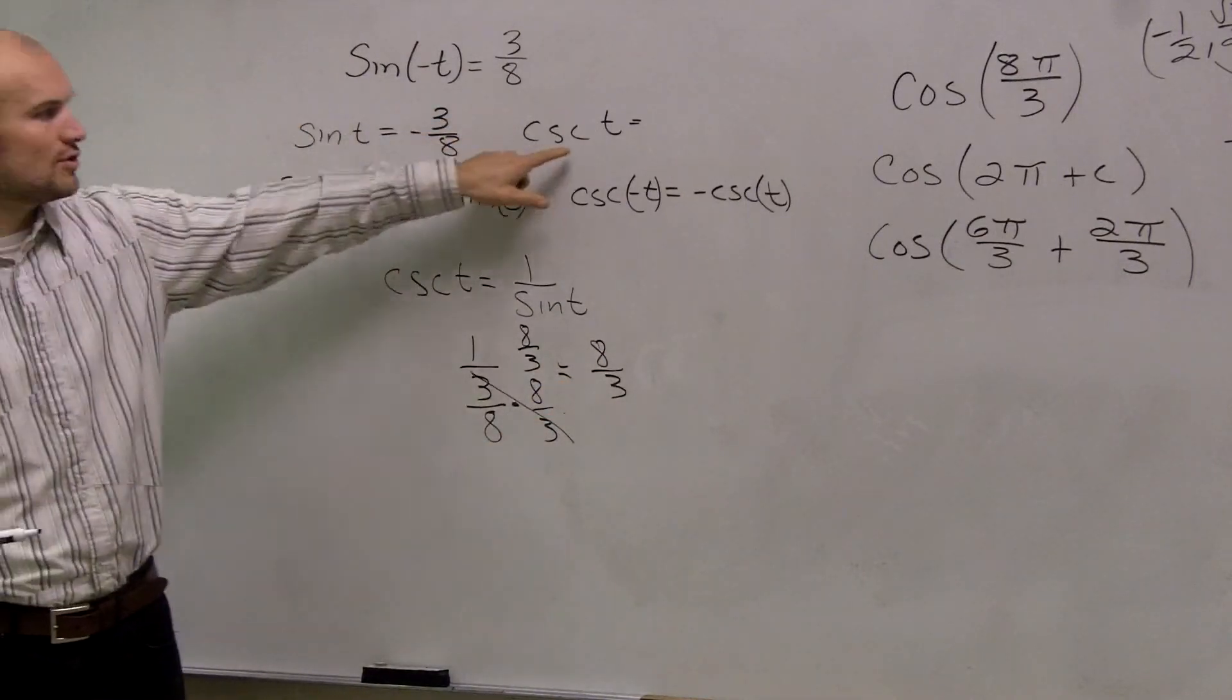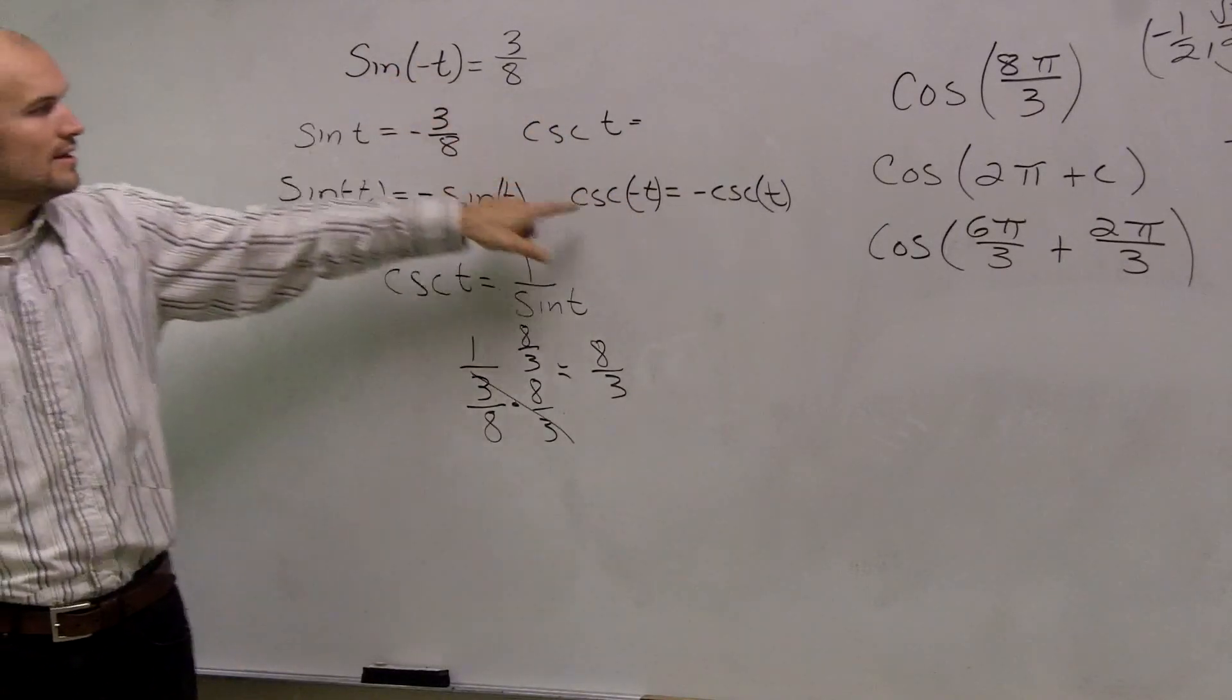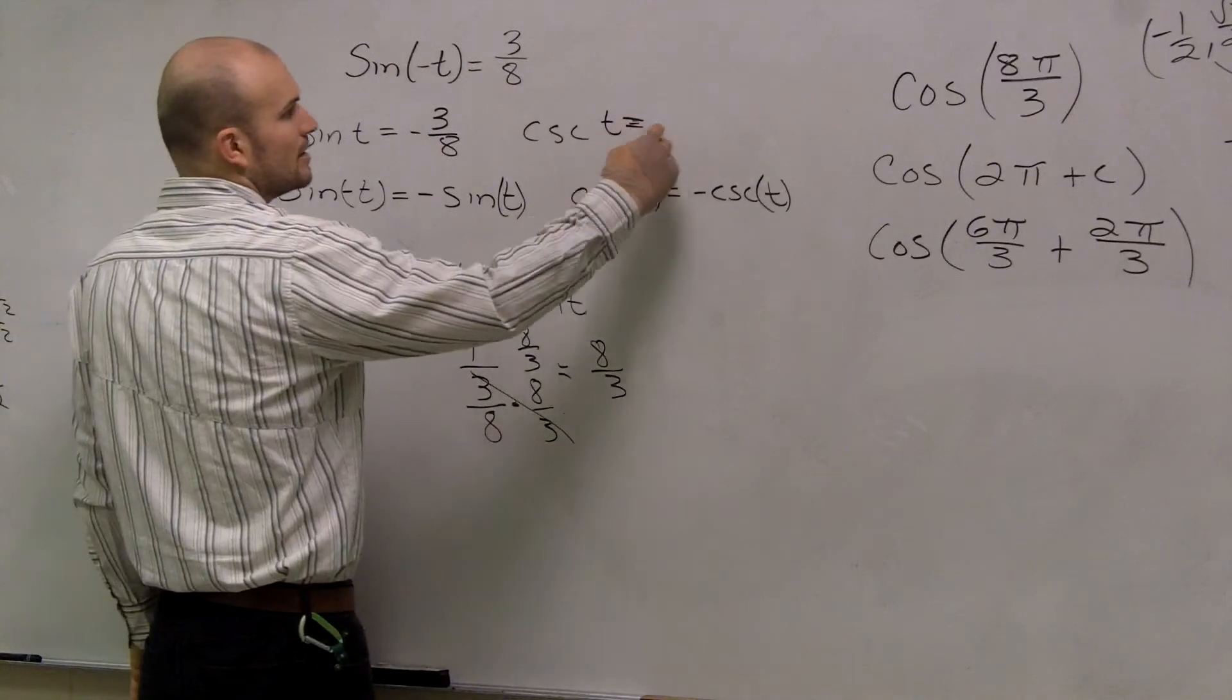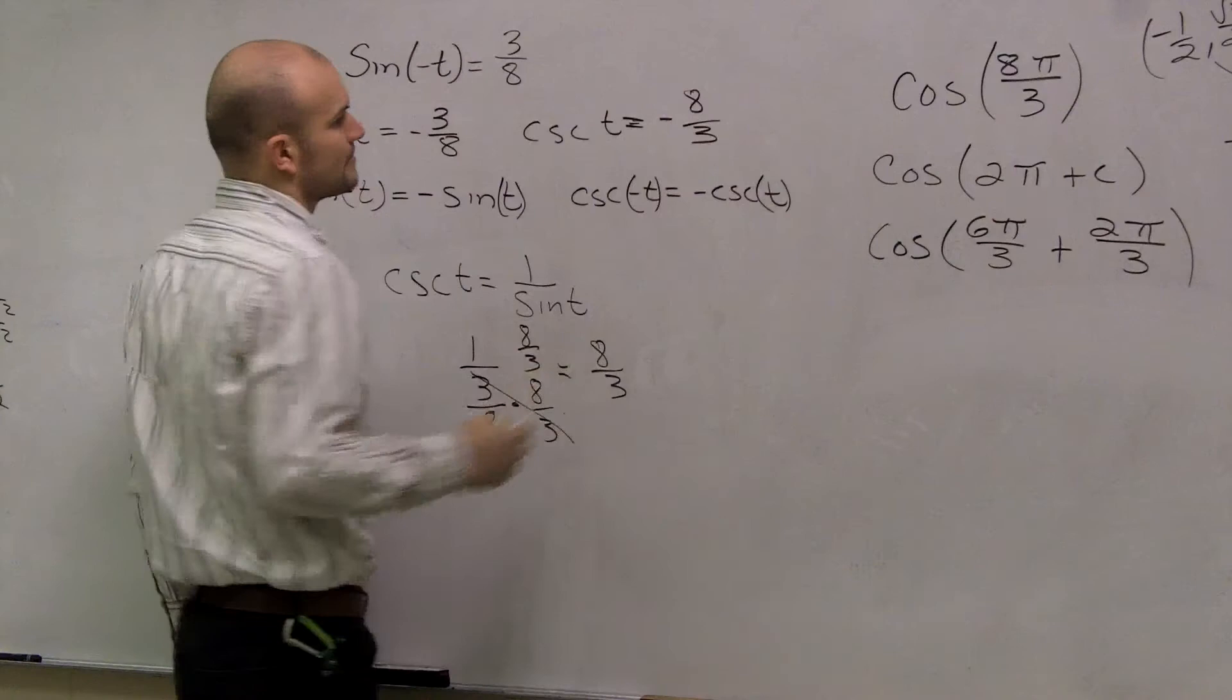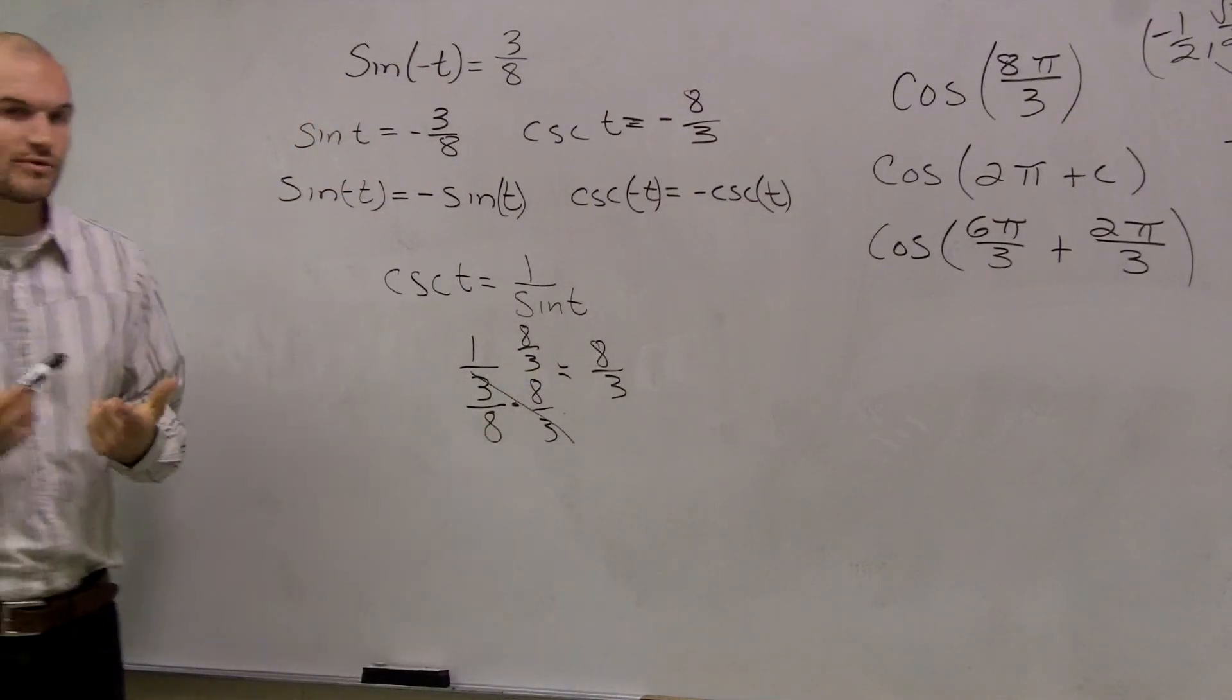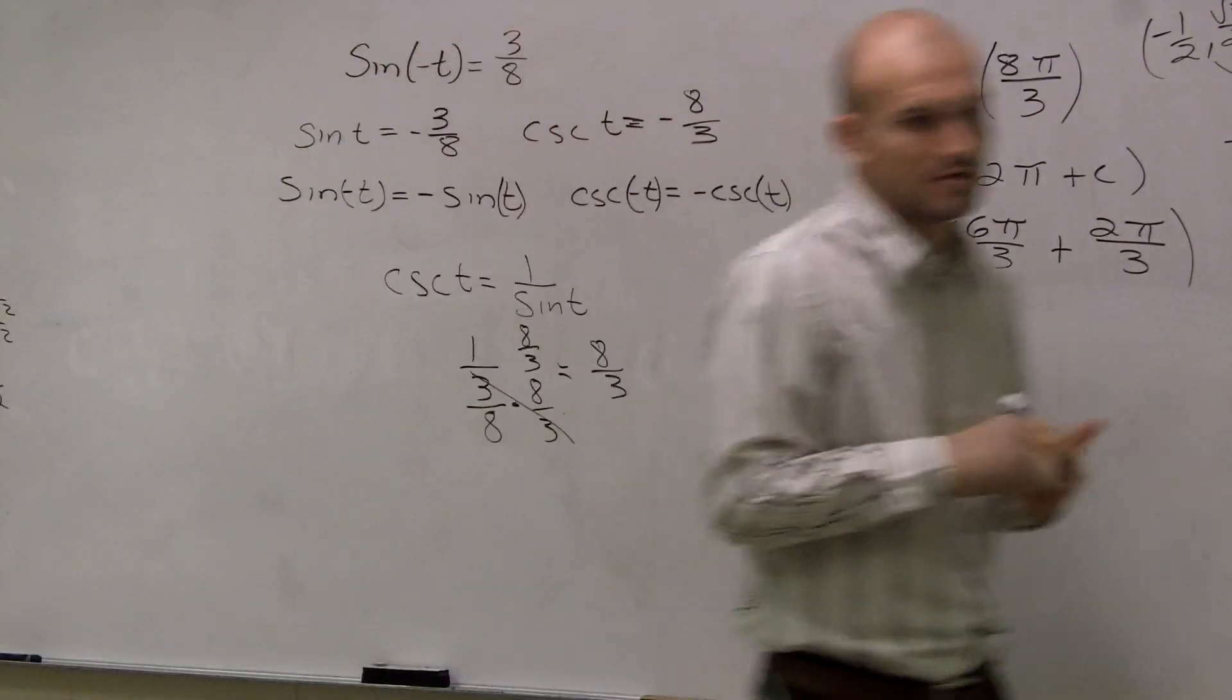So again, the cosecant, if I have cosecant of negative t, which this one is, then I'm going to have a negative cosecant of t. So this one is just going to leave me as a negative 8/3rds. So there's just your even and odd identities that you guys have to know for those.